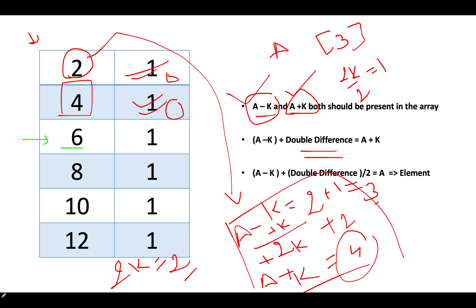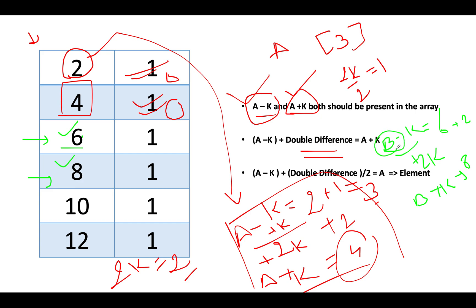Next we see 6. Assuming this corresponds to b-k, so b-k=6. We add the double difference 2k: 6+2=8. So b+k=8. We check whether 8 is in the array — yes it is, and 6 is also present. Both are present, so we can say that b is part of the answer. b-k+k = 6+1 = 7, so 7 becomes part of the answer. We add 7 to the output and reduce the frequency of 6 and 8 to 0.